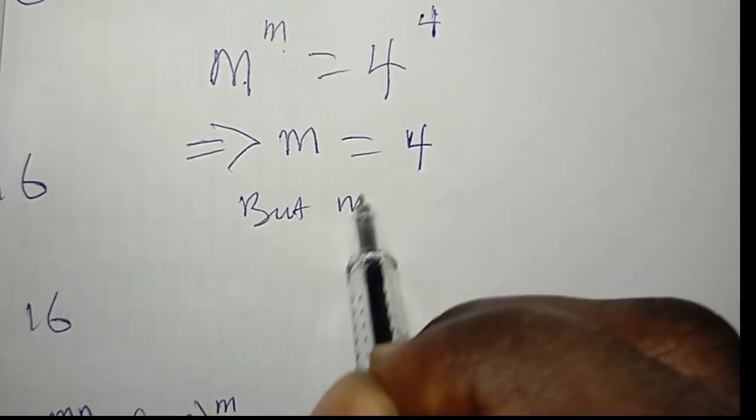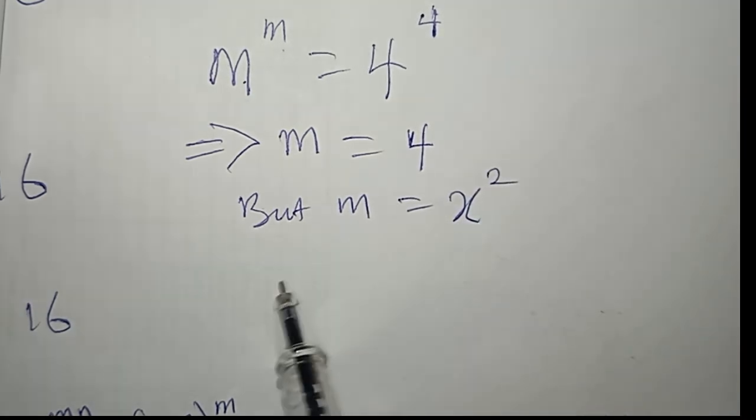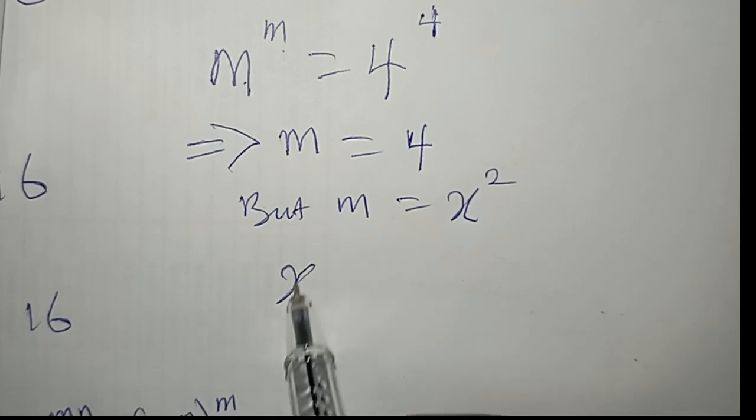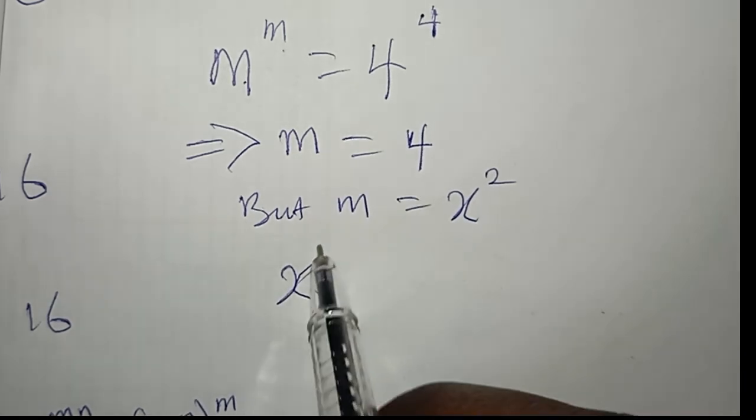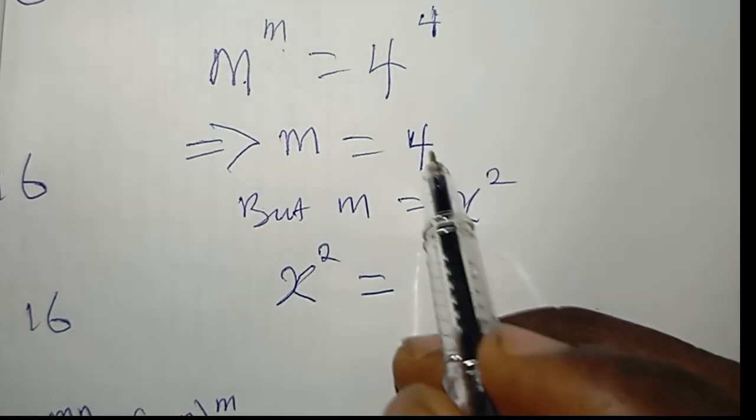But we actually set our m to be equal to x^2. So in order to get the value of x, we make the substitution back. So x^2 = 4.